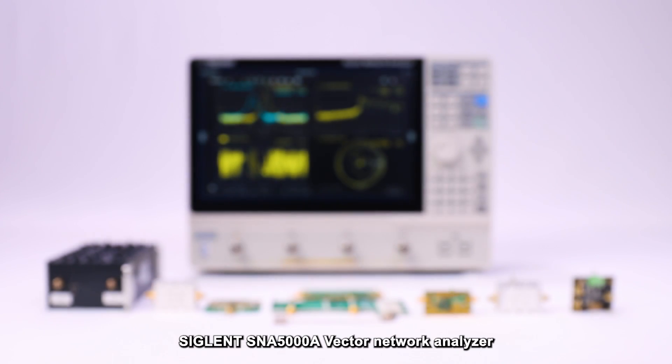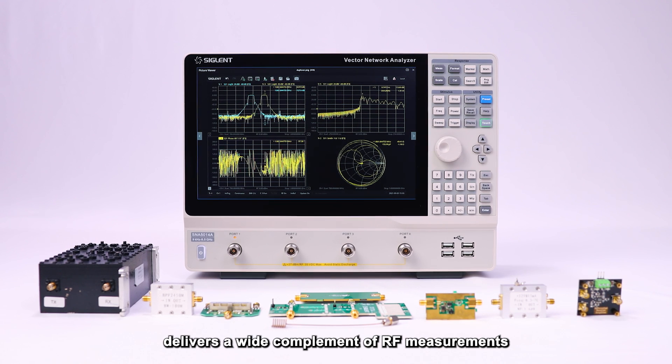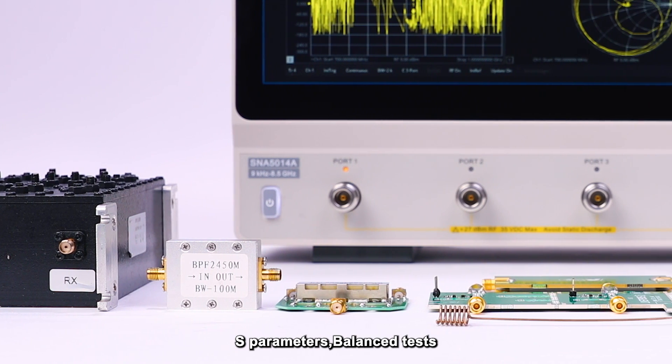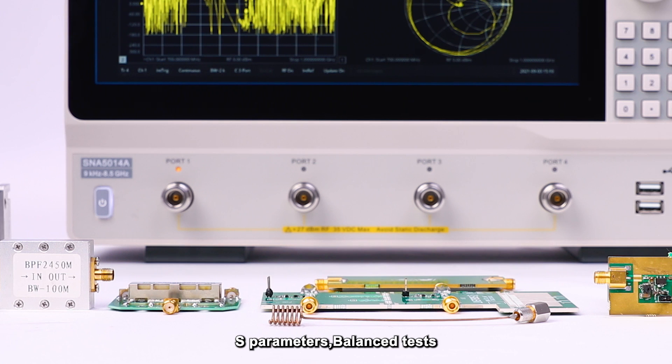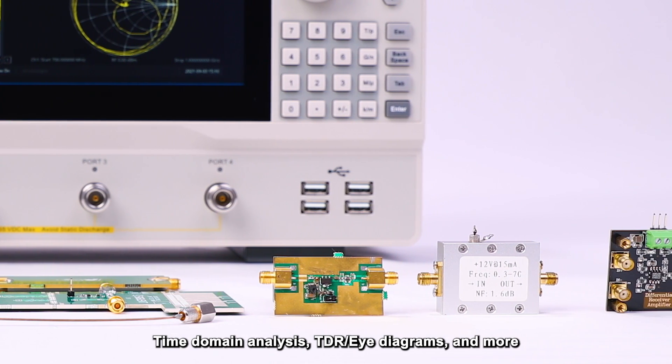The Siglent SNA 5000A Vector Network Analyzer delivers a wide complement of RF measurements, including S-parameters, balance tests, time domain analysis, TDR and eye diagrams, and many more.